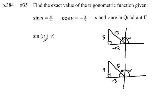Okay, now what I'm looking for is sine of u plus v. I know from my sum and difference formulas that the sine of u plus v can be rewritten like this: the sine of u times the cosine of v plus the cosine of u times the sine of v.